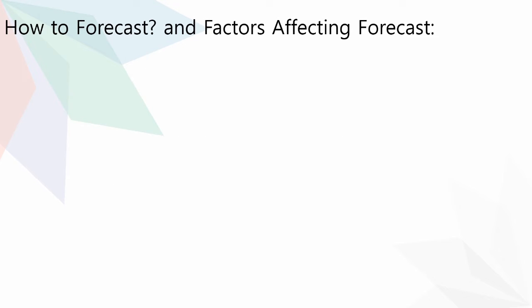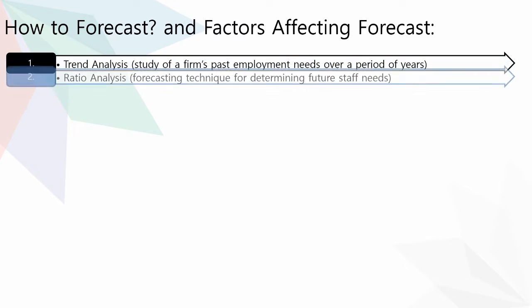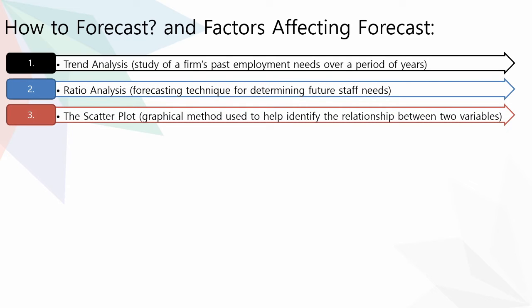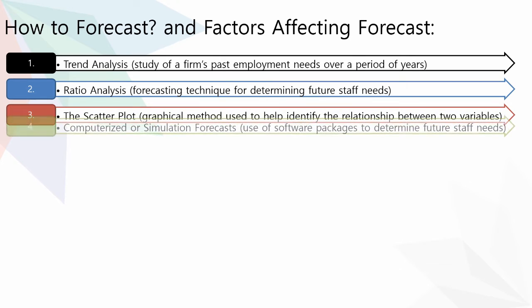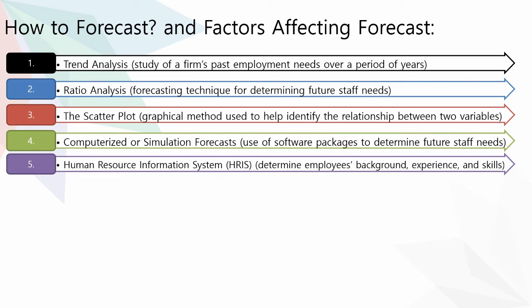Now, how to forecast and factors affecting forecast. Trend analysis is the study of a firm's past employment needs over a period of years. Ratio analysis is a forecasting technique for determining future staff needs. The scatter plot is a graphical method used to help identify the relationship between two variables. Computerized or simulation forecasting uses software packages to determine future staff needs. Human Resource Information Systems (HRIS) are used to determine employees' background, experience, and skills.